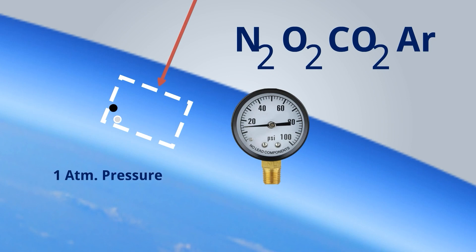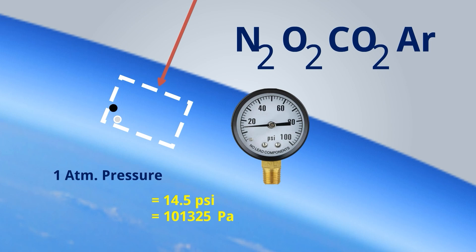One atmospheric pressure is measured at sea level. Its value in different units: 14.5 psi (pound per square inch, in FPS units), or 101,325 Newton per meter square in SI units — Newton per meter square means Pascal — which is also 101.325 kilopascal. Atmospheric pressure can also be expressed as 1.033 kg per centimeter square. From these units we can easily convert between psi, kPa, and kg per centimeter square.